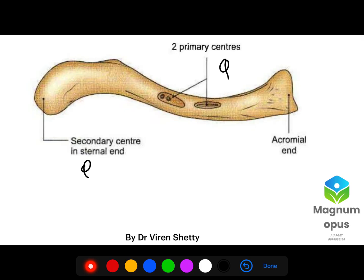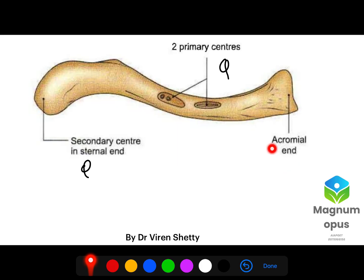Looking at the image, one side of the clavicle is towards the sternum and the other side is the acromial end, because it touches the acromial end of the scapula.